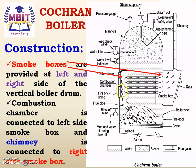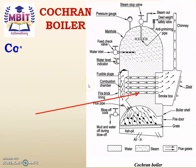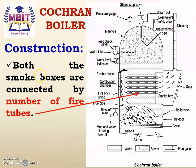The chimney is connected to the right-hand side smoke box. Both smoke boxes are connected by a number of fire tubes. The left-hand side smoke box is also known as the extended combustion chamber. Both smoke boxes are connected through these fire tubes.